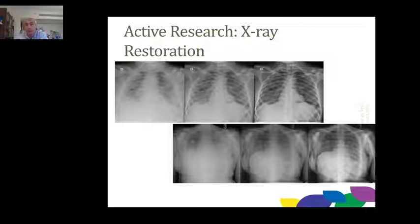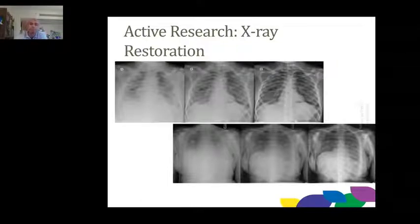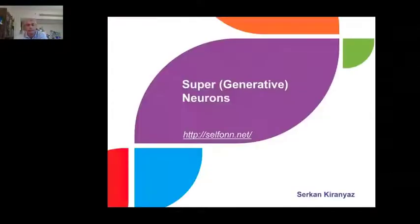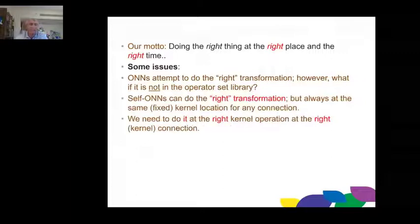Finally, if time allows, the new neuron model we call super-generative neurons. This time I am talking about not only doing the right thing, but doing it at the right place and the right time. The problem is: are we doing the transformation at the right location? If you localize your kernels, the kernel locations are usually around the pixel you want to compute.